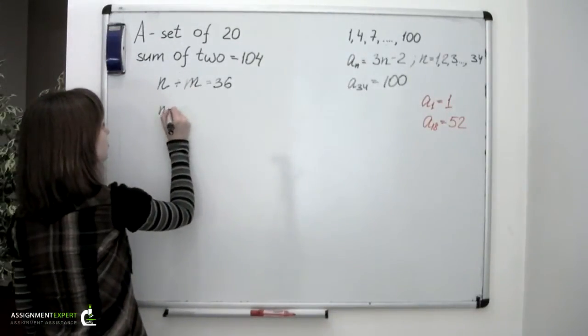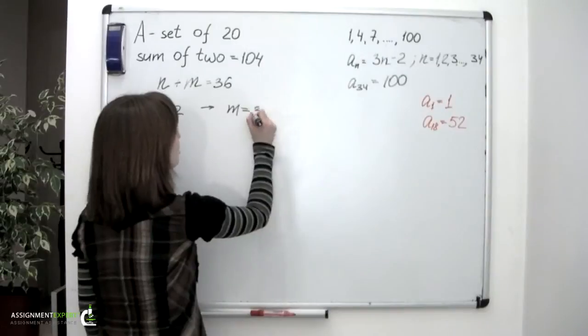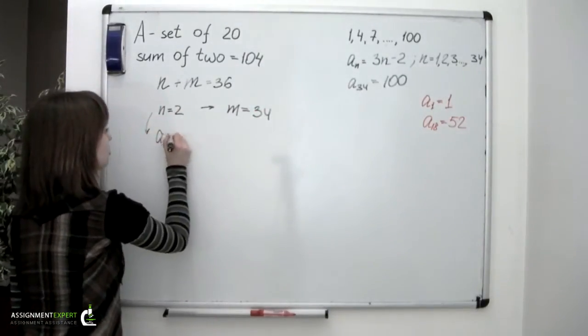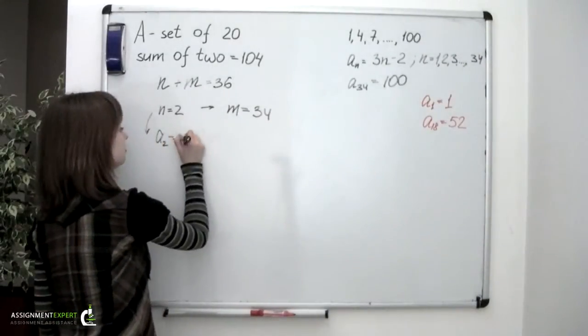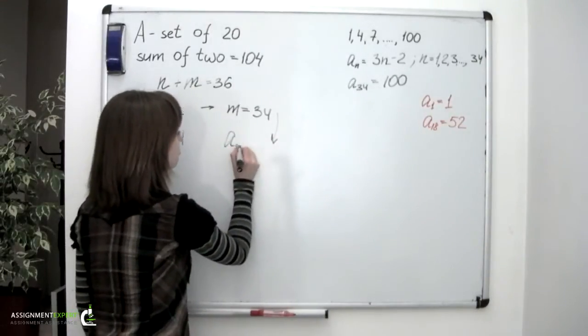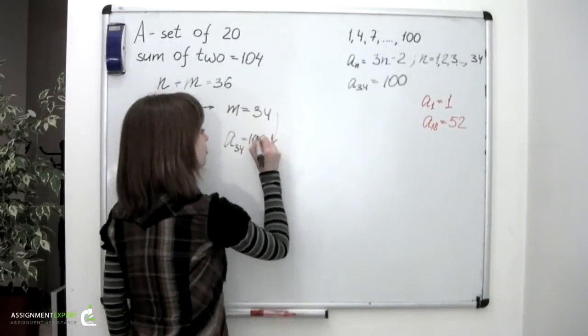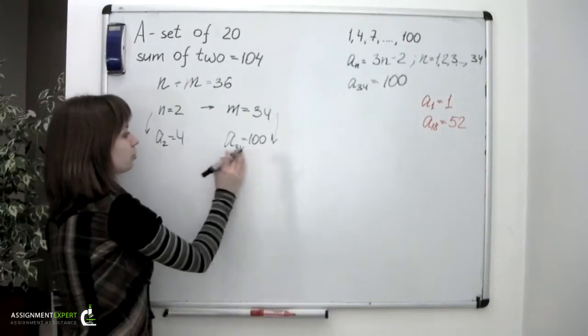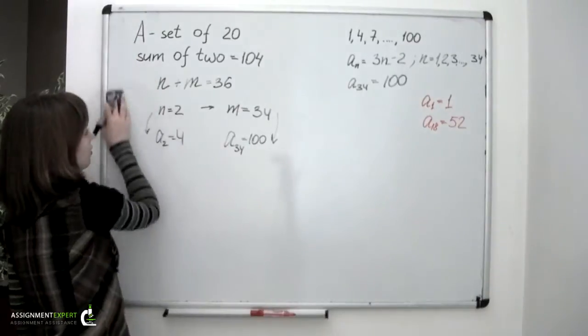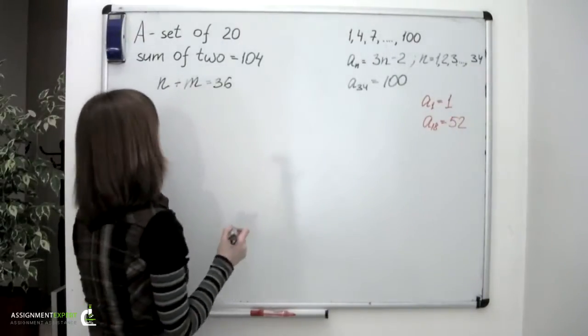Now, let's set n to 2. This means m would be equal to 34. And this corresponds to A second, which we have and we know that it's equal to 4. And this one corresponds to A 34th, which we have and we know that it's equal to 100. And if we add them, 4 plus 100, we would obviously obtain 104.